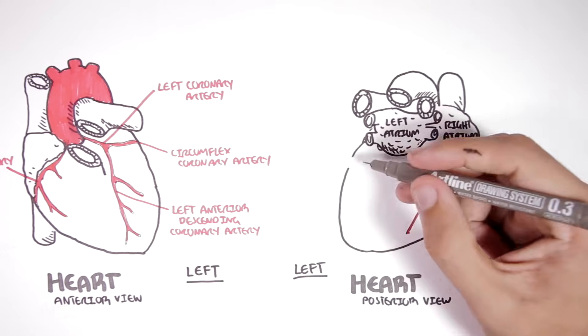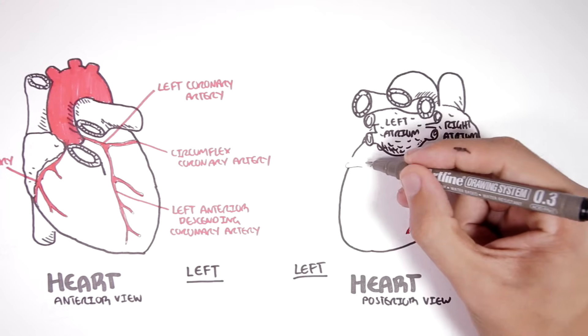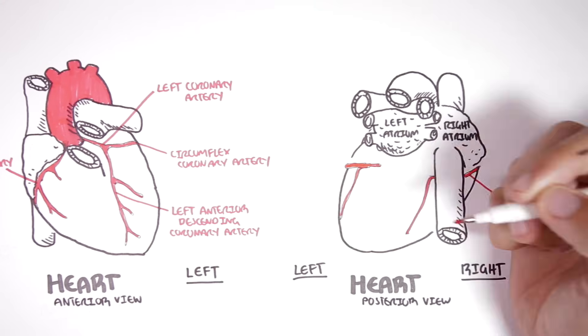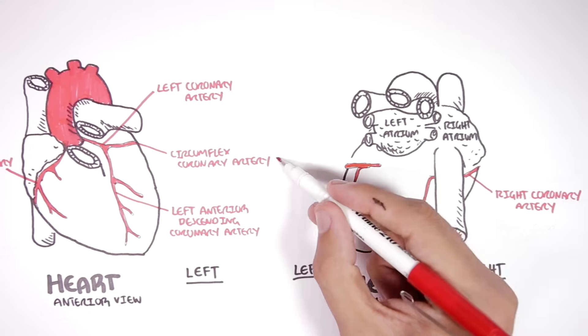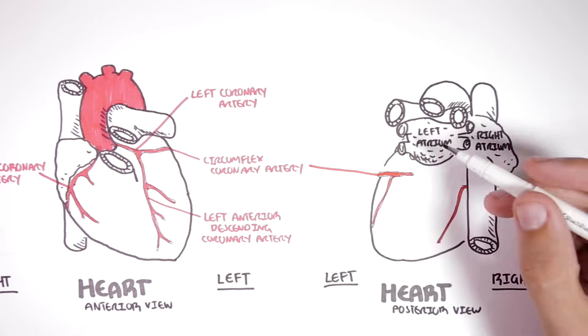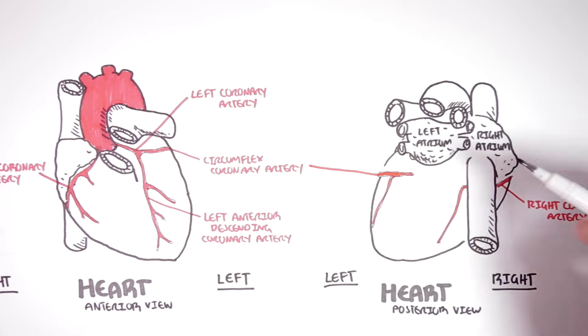On the left side here is the circumflex artery, which I mentioned, that wraps around and supplies the left atrium with freshly oxygenated blood.